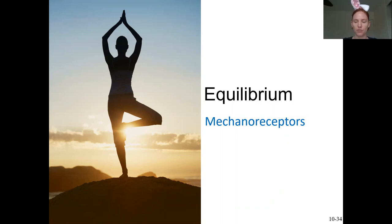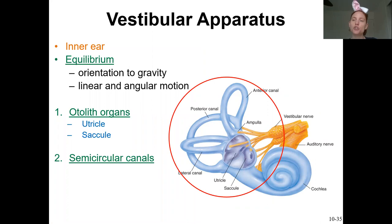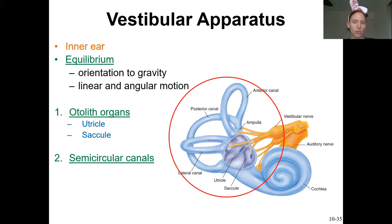Inside the inner ear, you have two general structures. The cochlea is for hearing. The rest of the structures make up the vestibular apparatus, which is used for equilibrium. So: cochlea for hearing, vestibular apparatus for equilibrium.